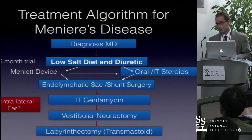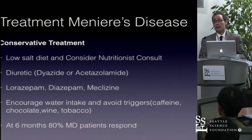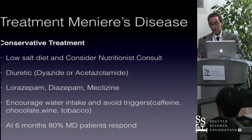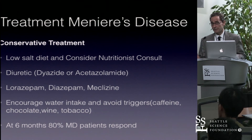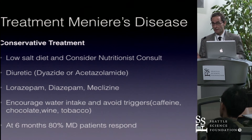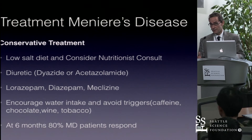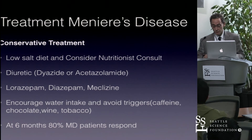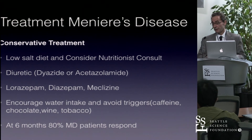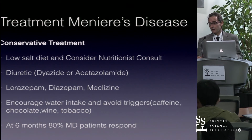Starting with conservative treatment: low-salt diet and diuretic. I recommend a two-gram sodium diet and often have patients visit a nutritionist. For the diuretic, I prefer Dyazide, but will use Diamox if Dyazide is not beneficial. Vestibular-suppressant medication includes lorazepam, diazepam, or meclizine. I encourage patients to stay hydrated and avoid triggers such as caffeine, chocolate, wine, and tobacco. I reassess at six months — about 80% of Meniere's patients respond favorably to this treatment.